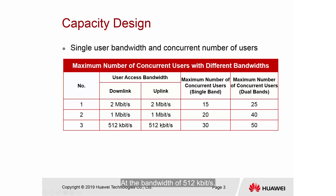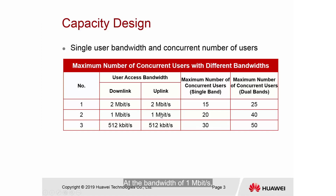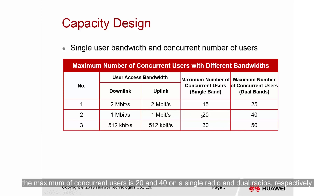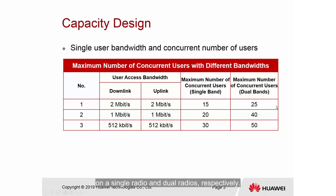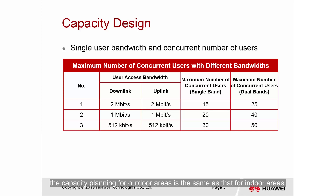At a bandwidth of 512 Kbps, the maximum concurrent users is 30 on a single radio and 50 on dual radios. At 1 Mbps, the maximum is 20 and 40 on single and dual radios respectively. At 2 Mbps, the maximum is 15 and 25 on single and dual radios respectively. In other words, capacity planning for outdoor areas is the same as that for indoor areas.